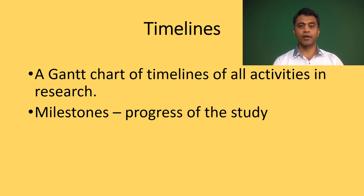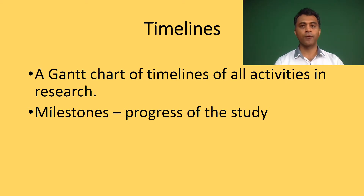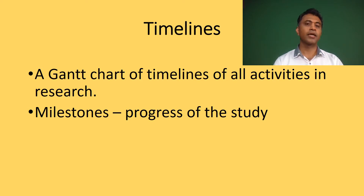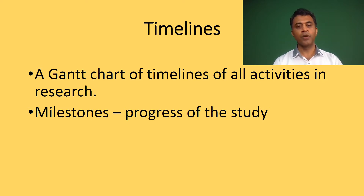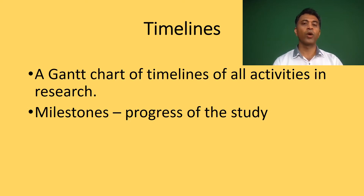Timelines — how the study will progress and the duration for each category. A Gantt chart of timelines for all activities and research should be given in the proposal. This will help in evaluating during the conduct of the study whether timelines are being followed. Milestones should be identified as the completion of important activities that will have a bearing on the progress of the study. So the timelines will have two aspects: a Gantt chart and the milestones.